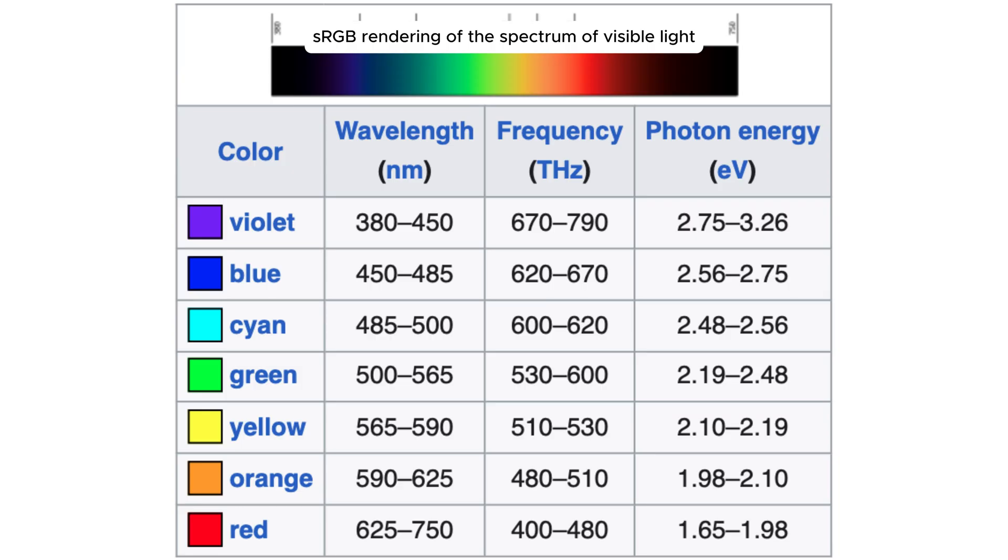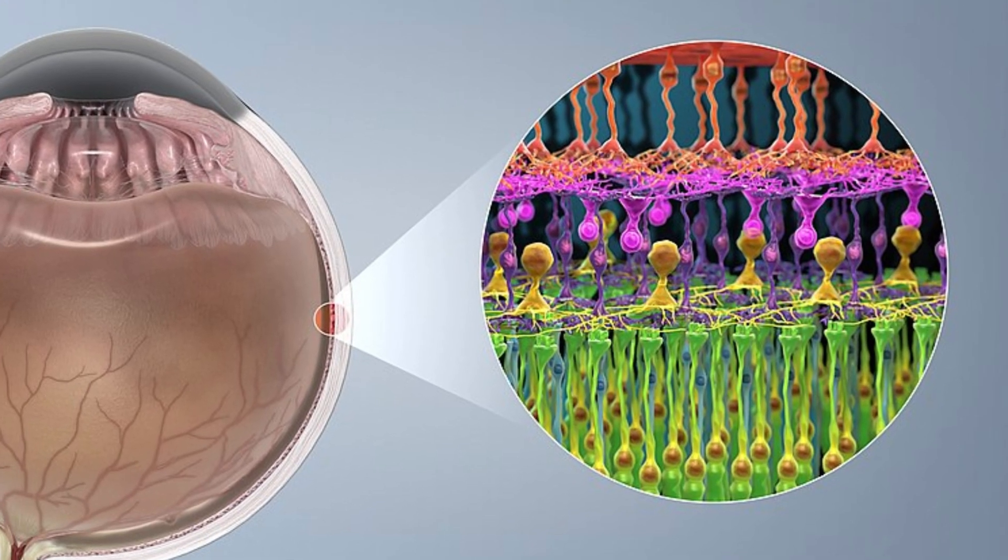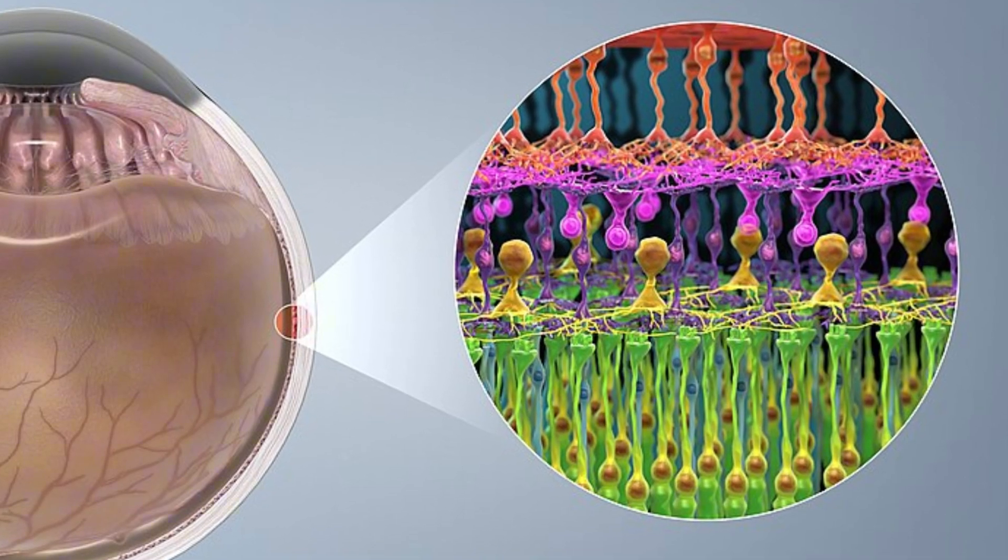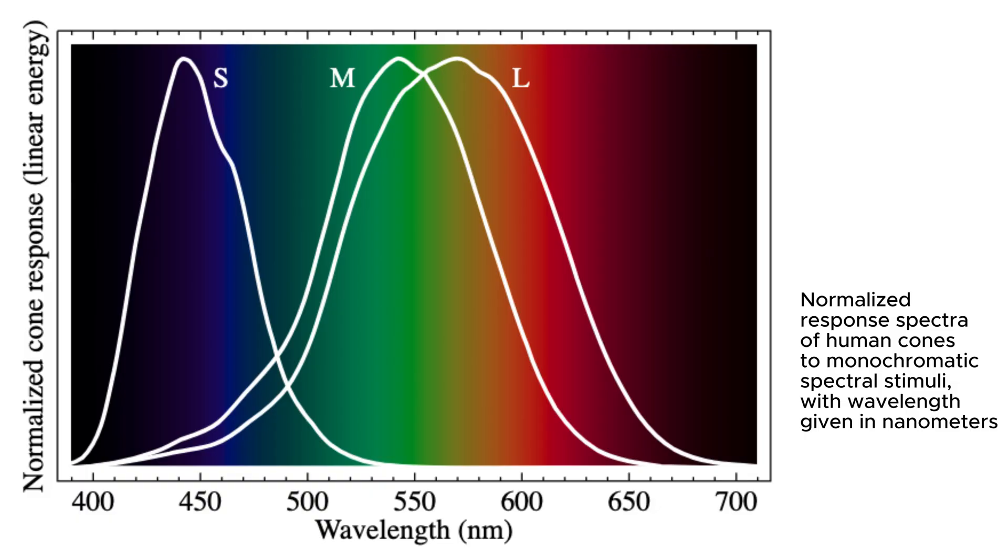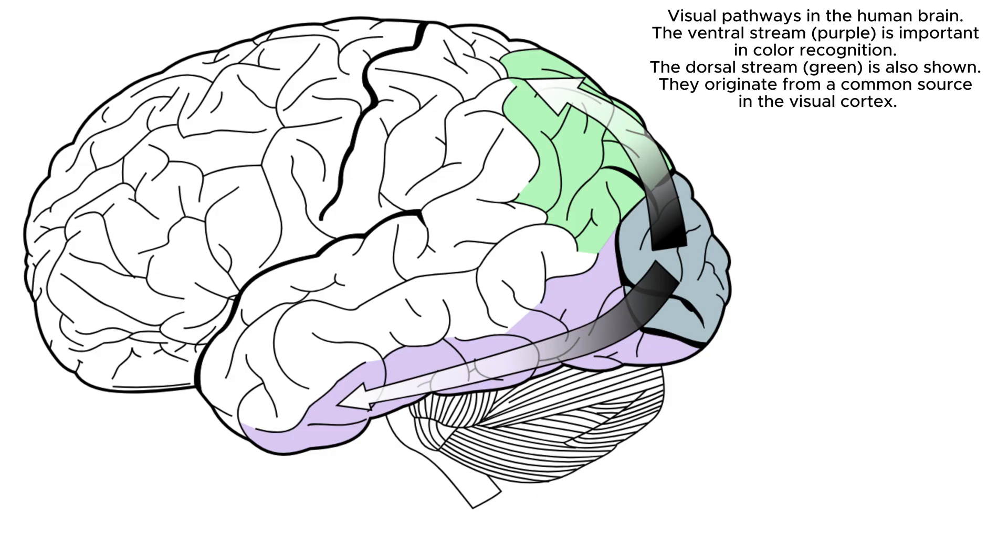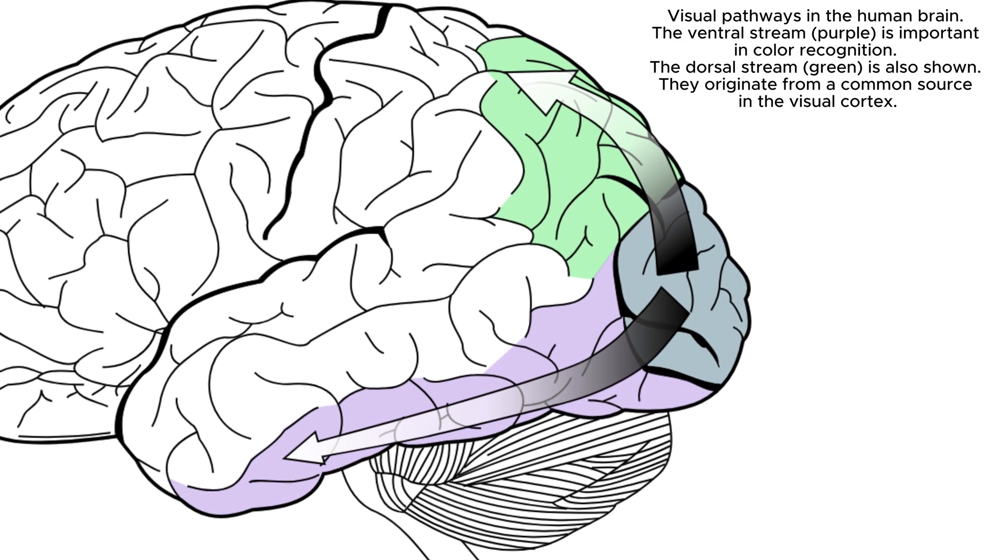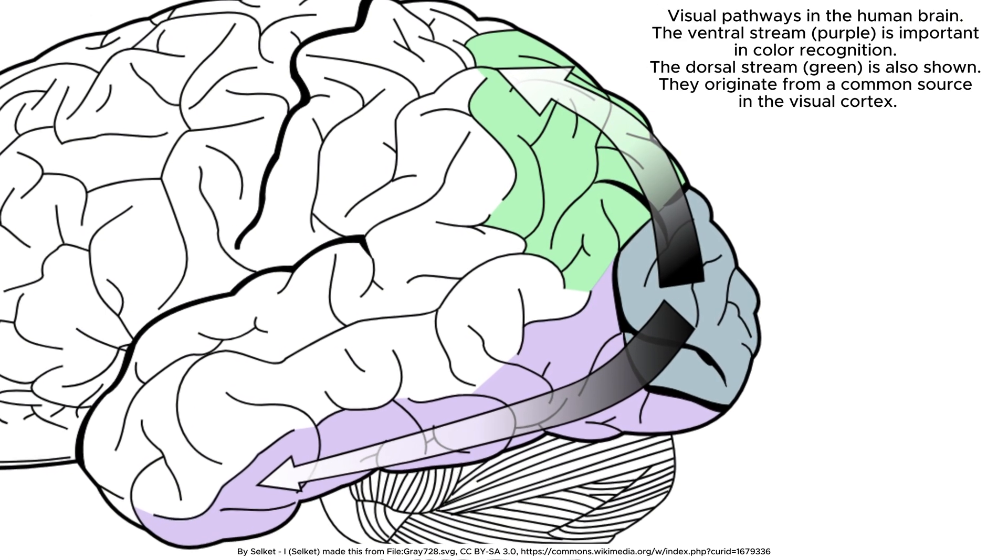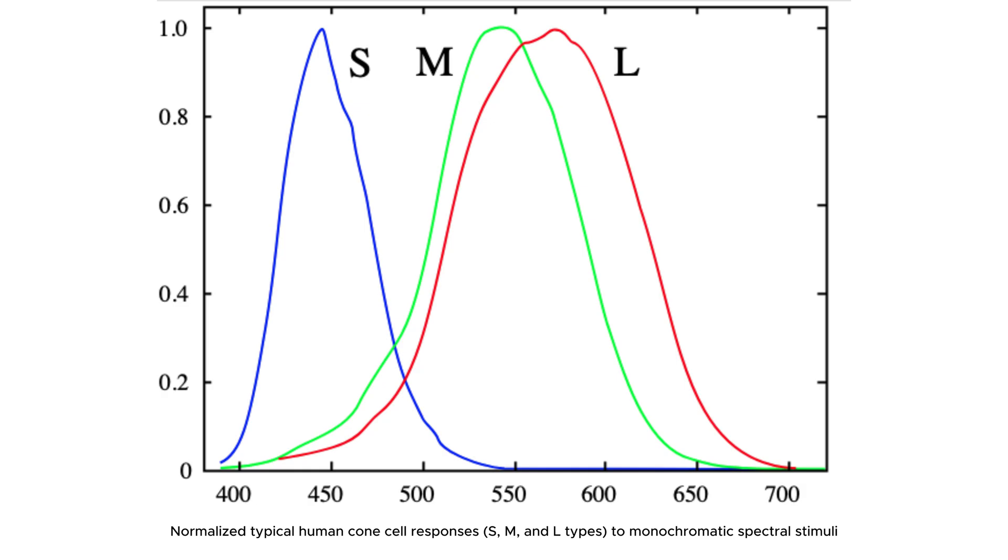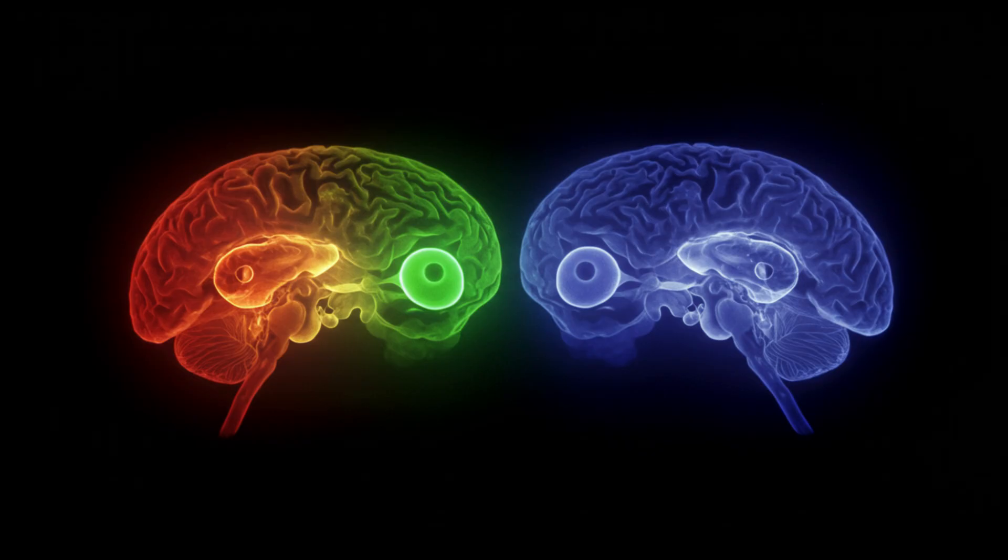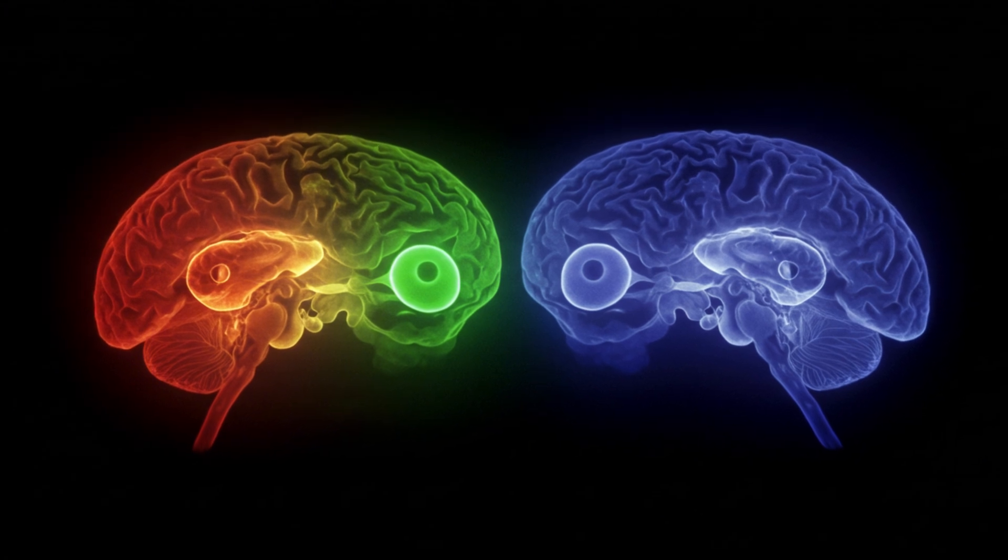This transformation happens through cone receptors in our eyes, with most humans having three types tuned to red, green, and blue light. Our brain combines these signals to create the full spectrum of perceived colors. For instance, producing yellow when red and green cones are equally stimulated, even though no yellow wavelength exists.